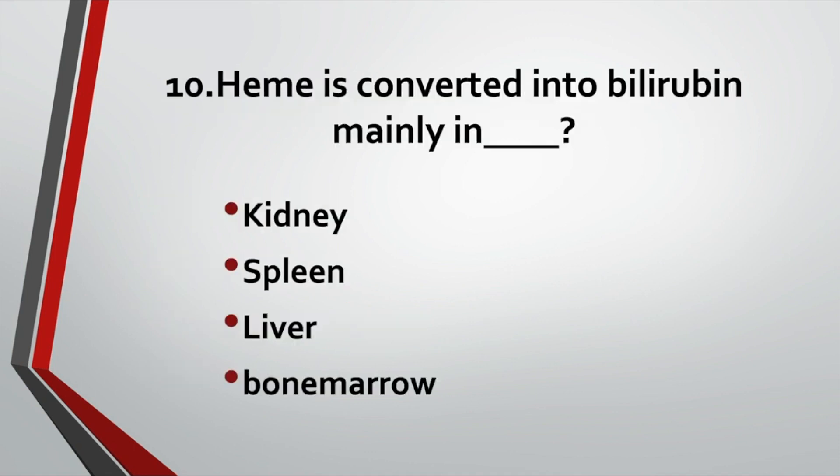Heme is converted into bilirubin mainly in: Option A: Kidney. Option B: Spleen. Option C: Liver. Option D: Bone marrow. Answer: Option B, Spleen.